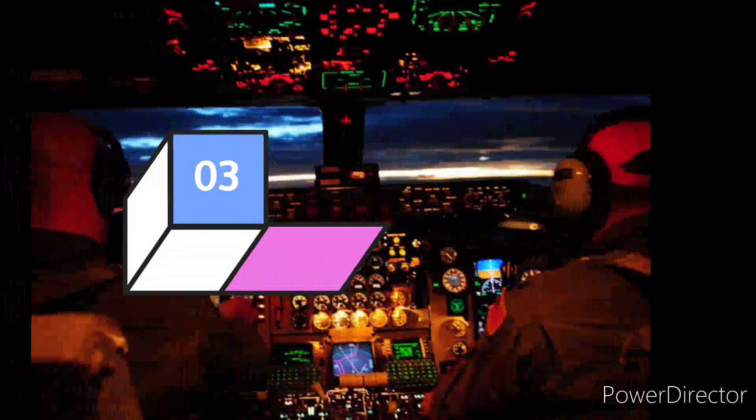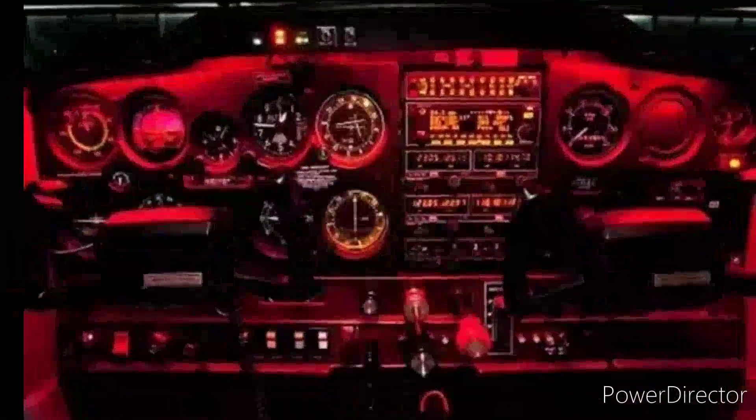Similarly, airplane cockpits use red lights so pilots can read their instruments and maps while maintaining night vision to see outside the aircraft.